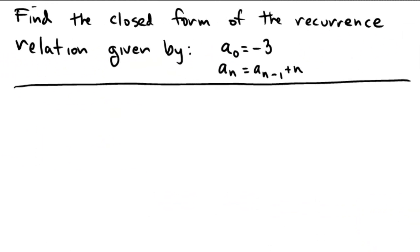Let's find a closed form for the recurrence relation given by a sub 0 equals negative 3 and a sub n equals the previous term plus n. First, to provide some inspiration, let's look at a few terms of the sequence. So a sub 0 is given to be negative 3.